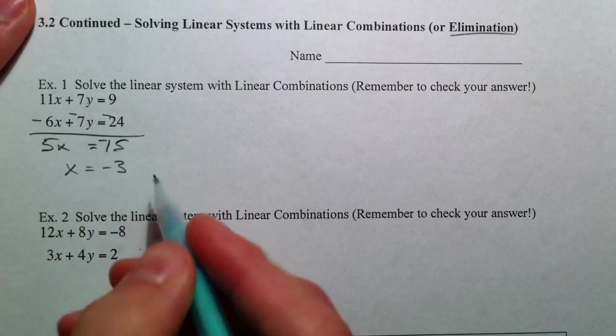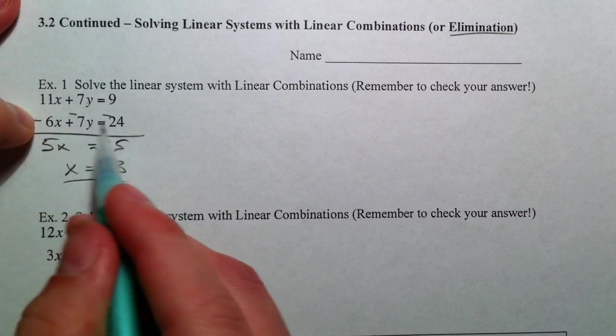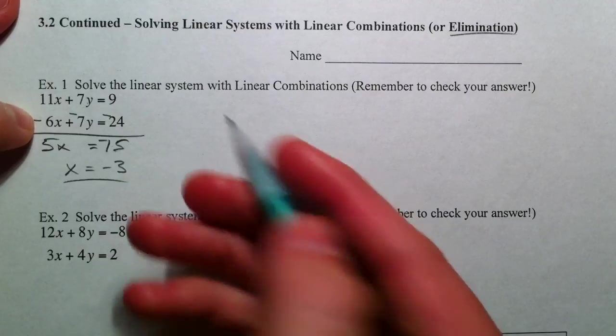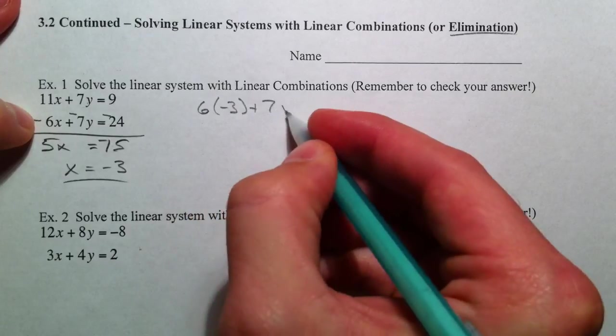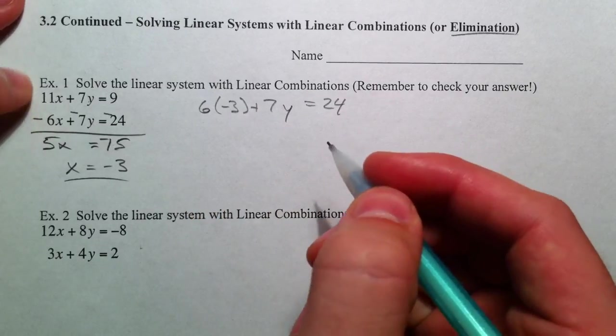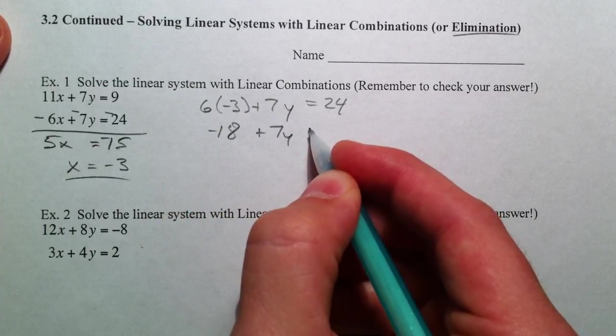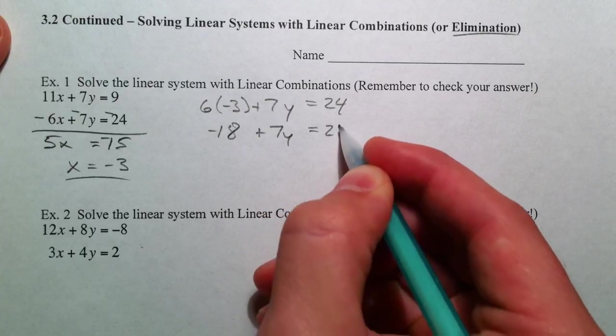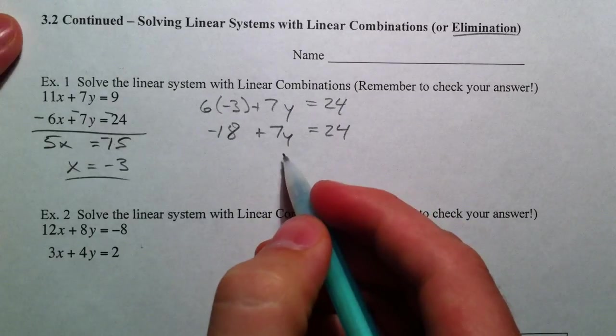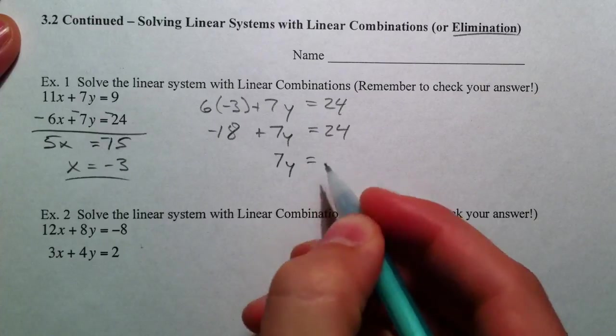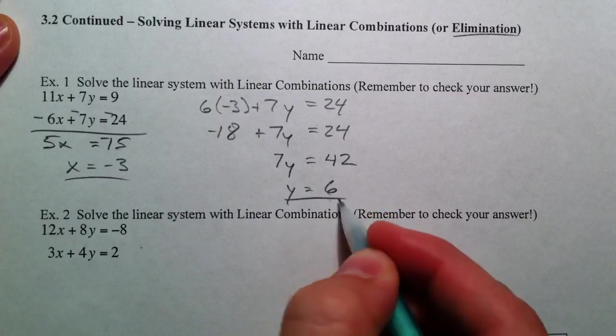And then x equals negative 3. When you plug it back in, plug it into either or. I'm going to plug it back into the one with smaller numbers here. 6 times negative 3 plus 7 times y equals 24. Negative 18 plus 7y. So if I add 18 to both sides, that's 42. And then y equals 6 after I divide by 7.